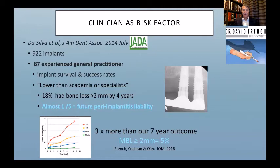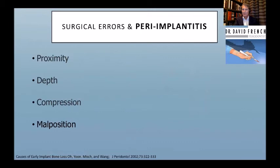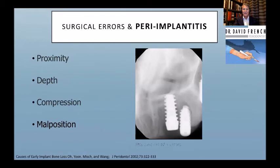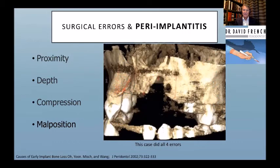That's why peri-implantitis referrals are increasing. What are dentists doing wrong? It comes down to proximity, depth, compression, and malposition. Here's a case that did everything wrong: implants too close together, at different heights, malposed, and using a hyper-compression implant. Almost comical in design — but here's the reality: this was a young mid-30s patient with a high smile line who now has an arch that is completely impossible to repair.